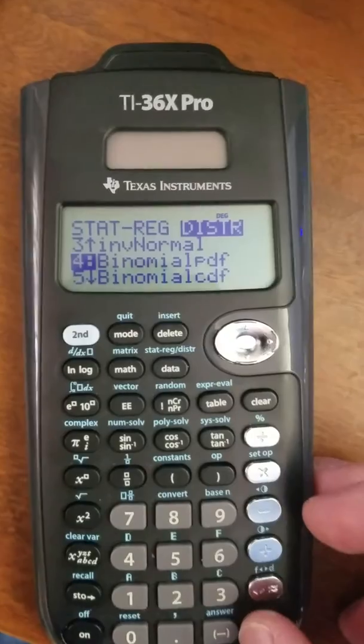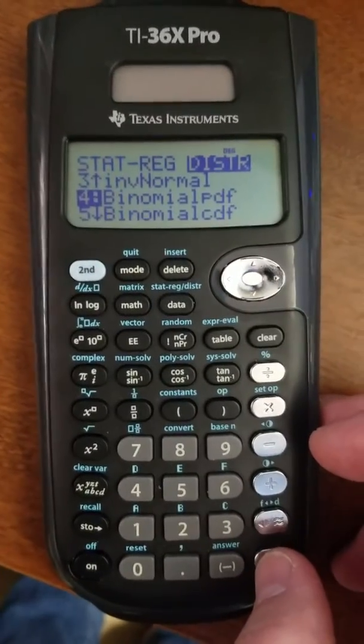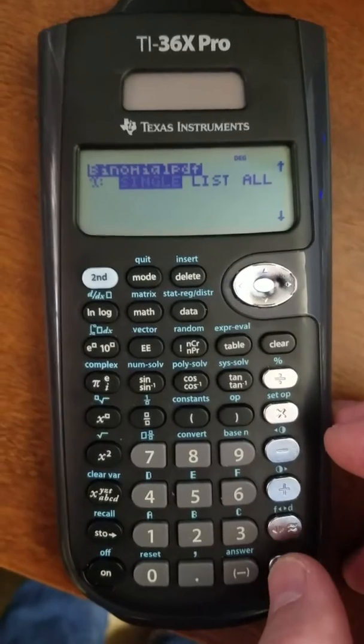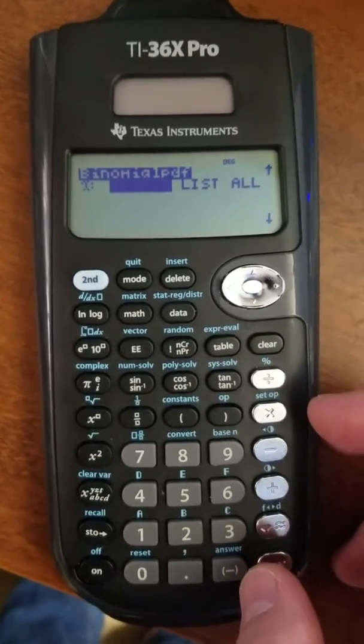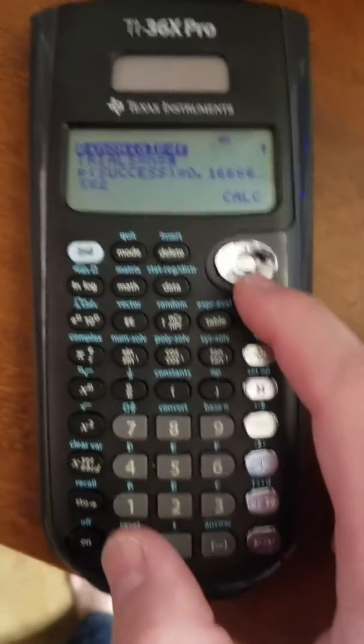So let's say I'm doing the binomial PDF, and I'm trying to find the probability of getting exactly some number of successes. I'll press enter. In general, I'm going to do a single on here, and I'm just pressing enter again.